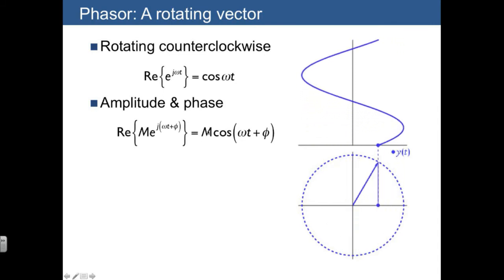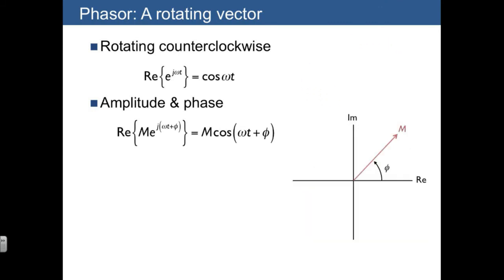So you can think of this phasor real part, you can think of e to the j omega t as just being a vector that's rotating counterclockwise in the plane. And then we're just taking the horizontal component of that vector. So we have a fancy way of writing m cosine omega t plus phi in terms of a vector in the complex plane.